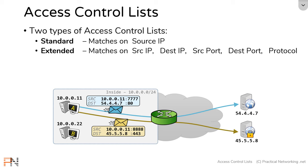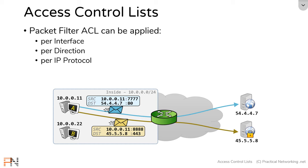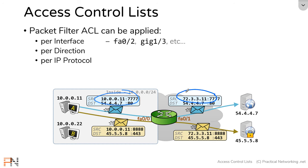These are the two types of access lists. You can create either type and apply them to a particular router. When you apply them, you can only apply them once per interface, per direction, and per protocol. By interface, I mean the actual physical interface of a router — our router had two interfaces, one facing the inside segment and one facing the internet. This matters because depending on which interface you apply the ACL to, the packet might look different. For example, if the router is performing NAT, the source IP address on one side of the router will be different from the other. So it's important to know where you're applying the access list before you write the access list statements.